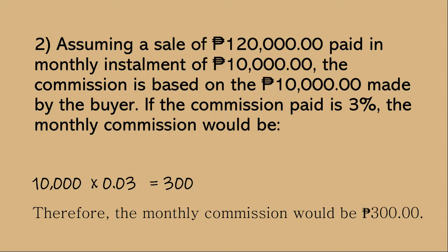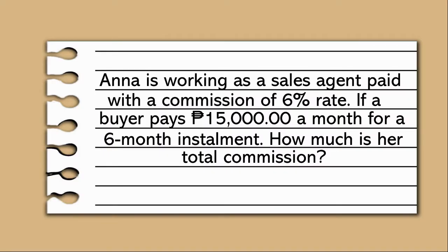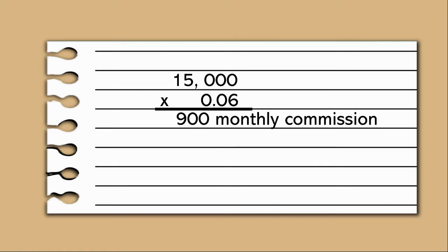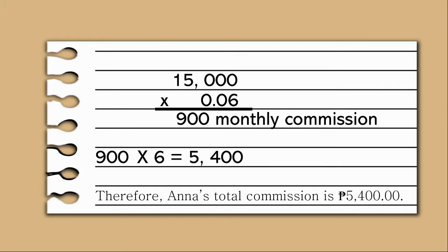Now try answering the following problem in your notebook and remember to pause this video as you solve. Anna is working as a sales agent paid by a commission rate of 6%. If a buyer pays 15,000 pesos a month for a 6-month installment, how much is her total commission? To answer that, we multiply 15,000 by 0.06, which equals 900 — that is the monthly commission. Since it is paid for 6 months, we multiply 900 by 6 to get her total commission of 5,400. Therefore, Anna's total commission is 5,400 pesos.